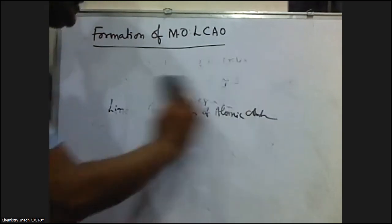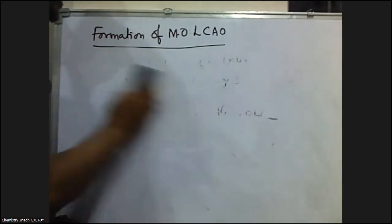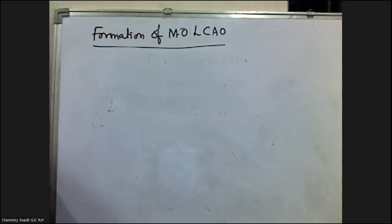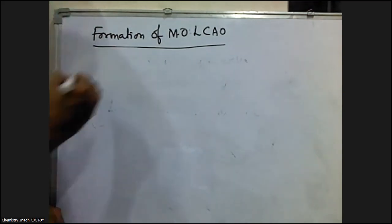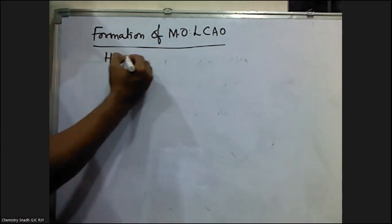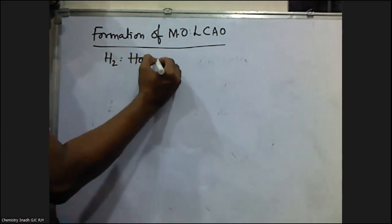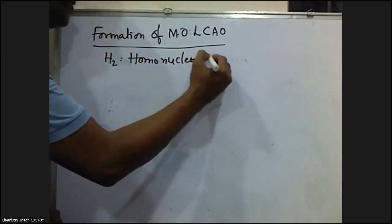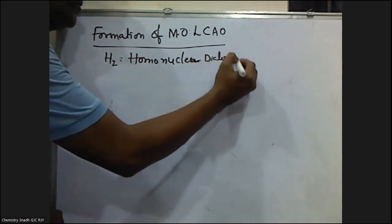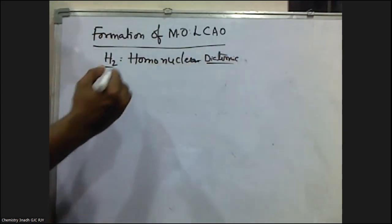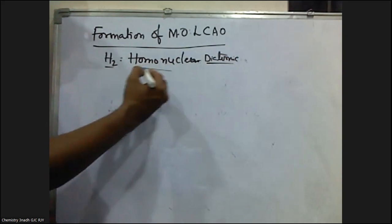Let me explain the formation of a simple diatomic molecule — a homonuclear diatomic molecule, hydrogen. A diatomic molecule has only two atoms. If the two atoms are the same element, it is called homonuclear. Otherwise, it is called heteronuclear. For example, HCl is a heteronuclear diatomic molecule.